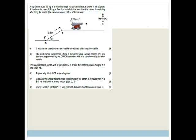A steel marble, mass 0.8 kilograms, is fired horizontally to the east. Immediately after firing the marble, the cannon moves to the west with a velocity of 0.26 meters per second. So I'm thinking that since we have a cannon firing off a cannonball, we're looking at a momentum type question.